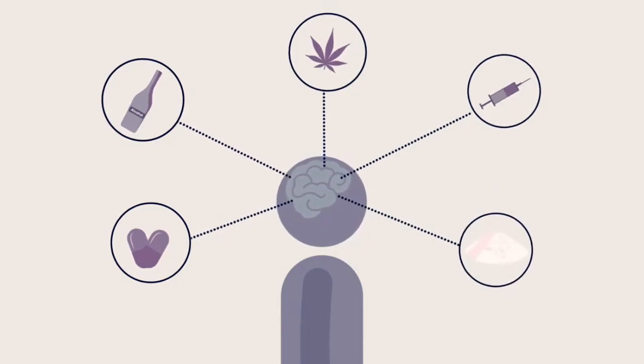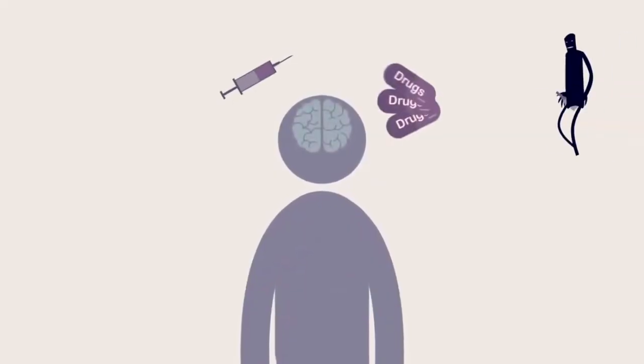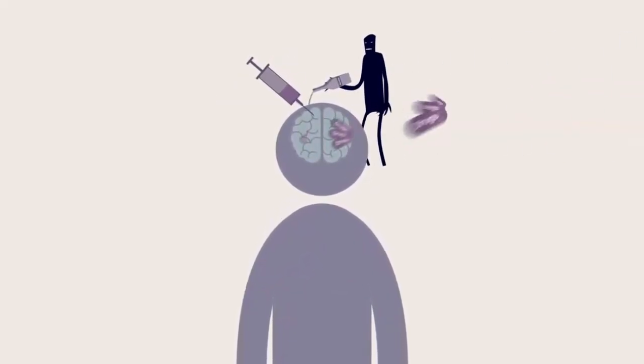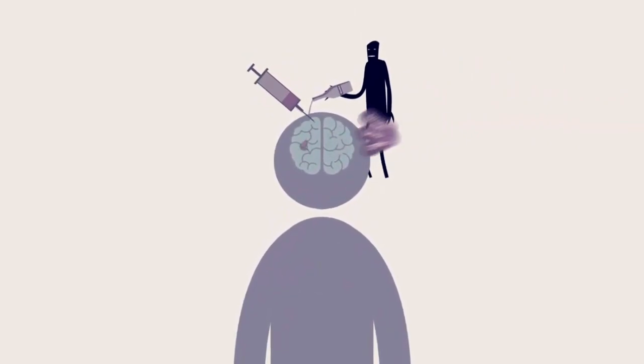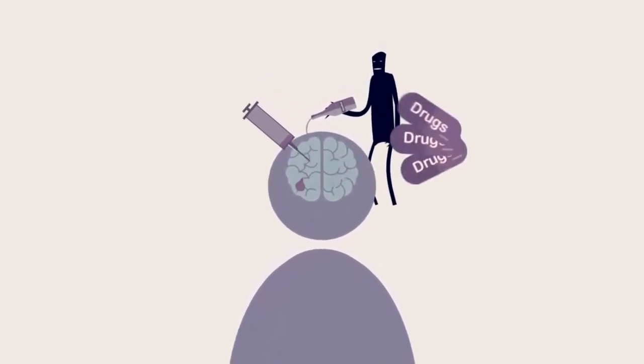In hijacking the brain, it can usurp those primary motivations—food, water, shelter, sex, and protecting our young. And the hijacker needs more and more of the substance to activate the same level of reward—that feeling of pleasure—causing the brain tissue to become increasingly damaged with continued drug use.